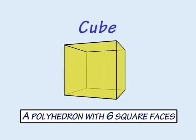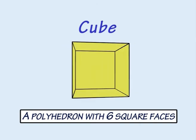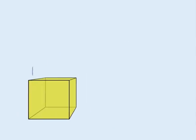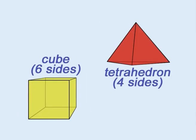A cube is also a polyhedron because each face is a square. However, a cube has six sides, whereas a tetrahedron has only four.